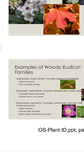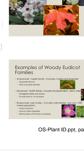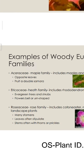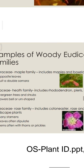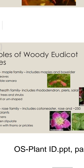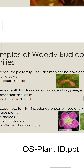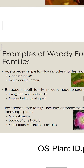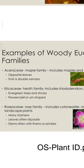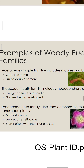These are a few examples of woody dicot families. Aceraceae, the maple family, includes maple and box elders. They have opposite leaves and fruits that are double samara.